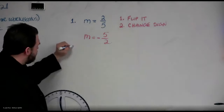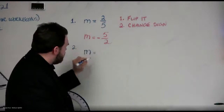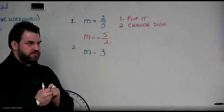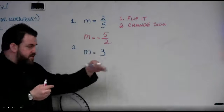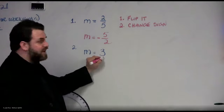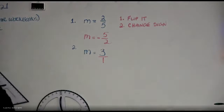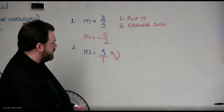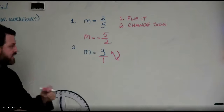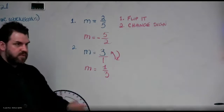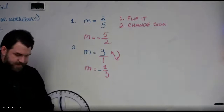Let me put one more example. If you get a whole number slope — how do you flip a whole number? You want to go ahead and make this three into a fraction by just putting it over one. Now flip it. So do the flip maneuver and you'll end up with one over three. And then you change the sign — it'll be negative one over three.